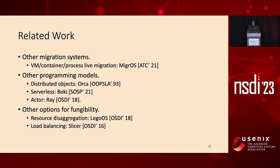There are three lines of related work. First, existing migration systems — including VM, container, and process-level migration — and Nu migrates significantly faster than them. Second, other programming models for distributed applications, including distributed objects, serverless, MapReduce, and actors; compared to them, Nu provides a process-like model more familiar to programmers. Finally, other alternatives for resource fungibility, like resource disaggregation and load balancing, can be combined with Nu to further improve fungibility.